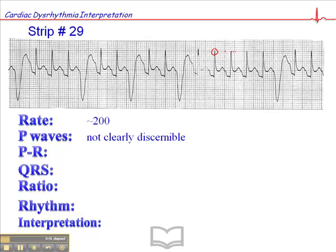We don't see P-waves anywhere — they're not clearly discernible. Although you might argue that this is a P-wave coming off the T-wave, because we see it consistently here, and we see it sort of there, and we see it here, we see it here. It would be fair enough to call this a P-wave.